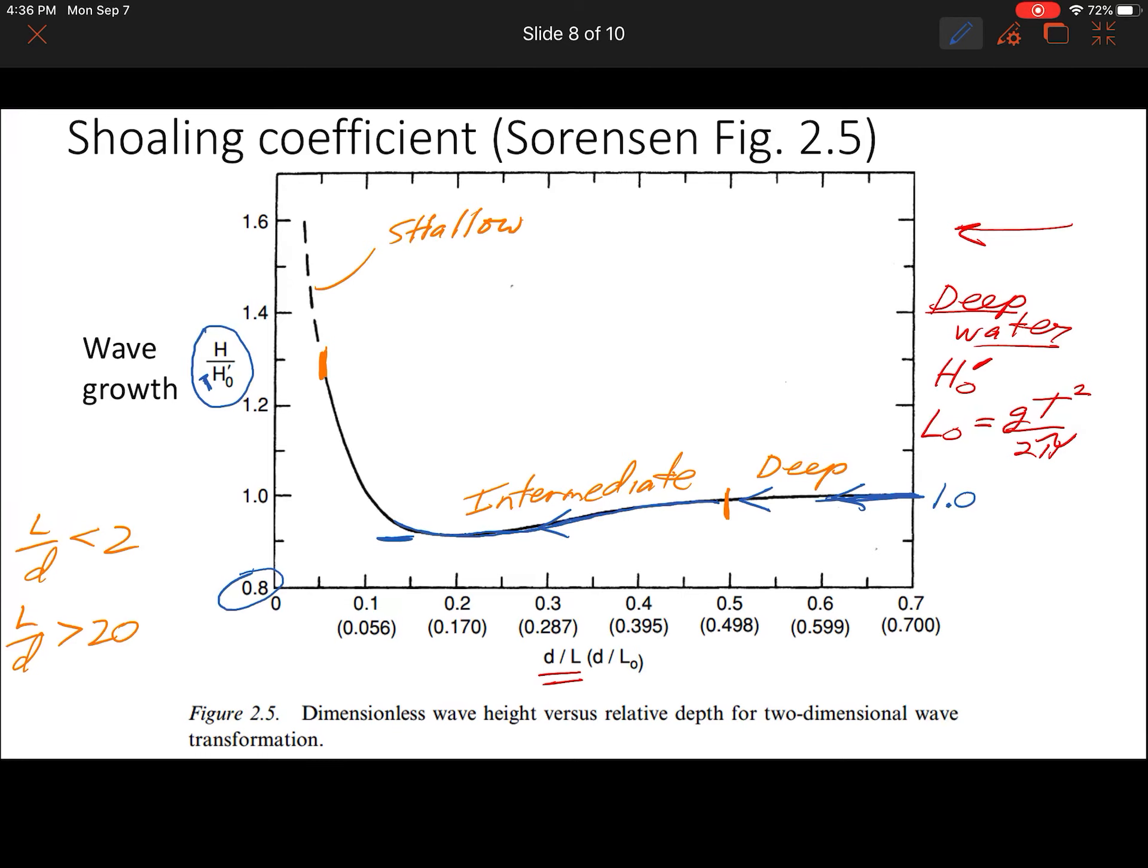Once it gets to be almost a shallow water wave—and you notice that it's not quite exactly when it becomes shallow, it's more like L over d of about 10—this would be L over d of about 10. Once it goes beyond that in terms of getting shallower and longer, that's when you really start to see this dramatic wave growth.